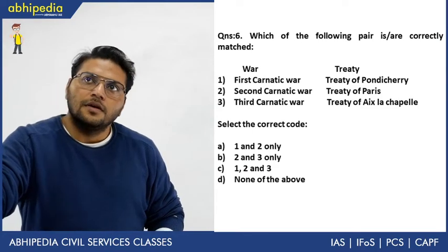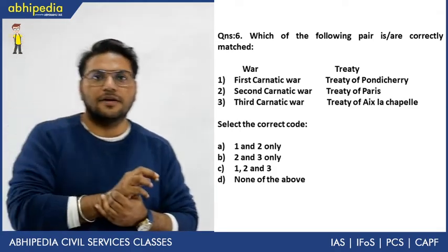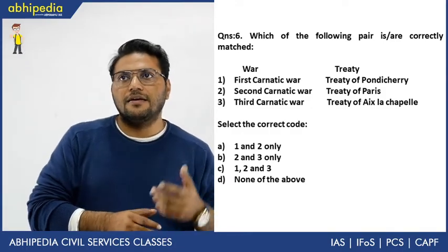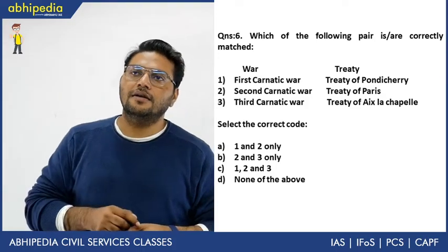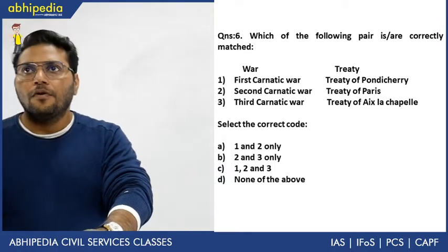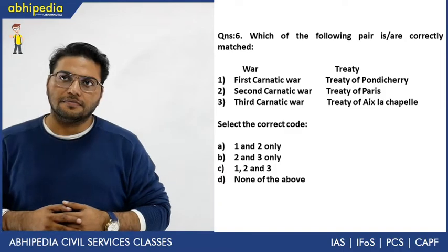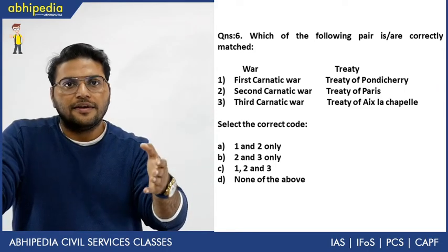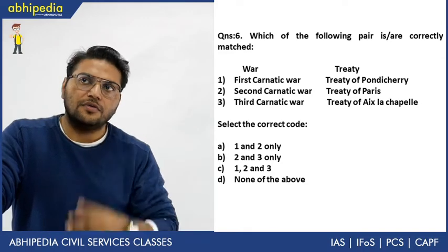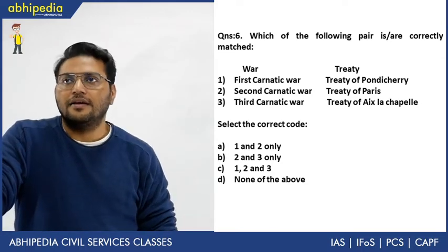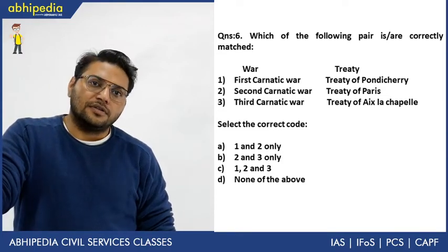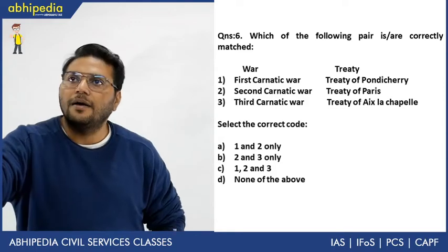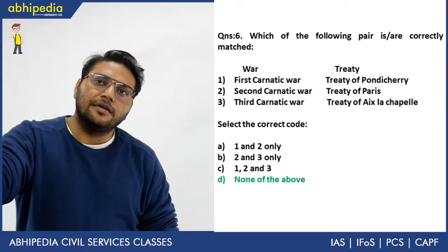Next question: which of the following pairs correctly match war and treaty? First Carnatic War — Treaty of Pondicherry; Second Carnatic War — Treaty of Paris; Third Carnatic War — Treaty of Exila-Japan (Aix-la-Chapelle). Discussing the correct matches: First Carnatic War ended with Treaty of Aix-la-Chapelle; Second Carnatic War with Treaty of Pondicherry; Third Carnatic War with Treaty of Paris. So no pair is correctly matched. Answer is D — none of the above.